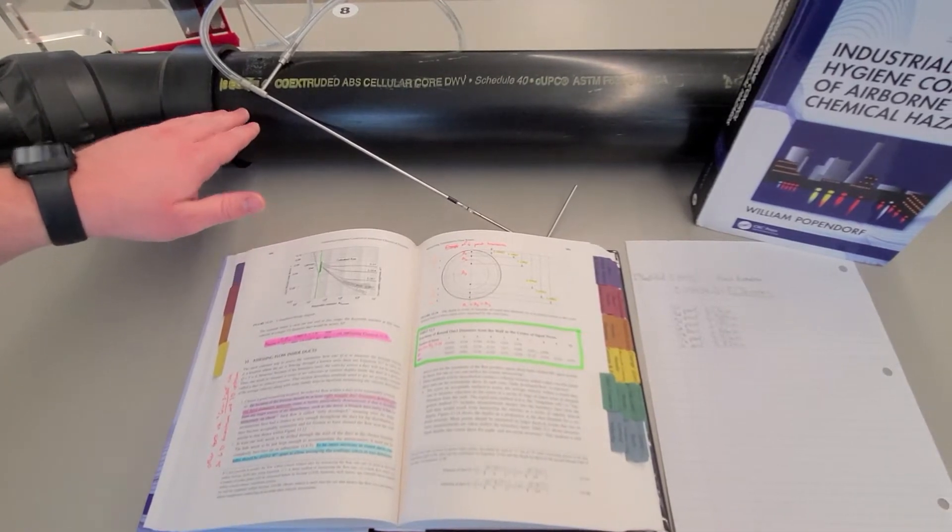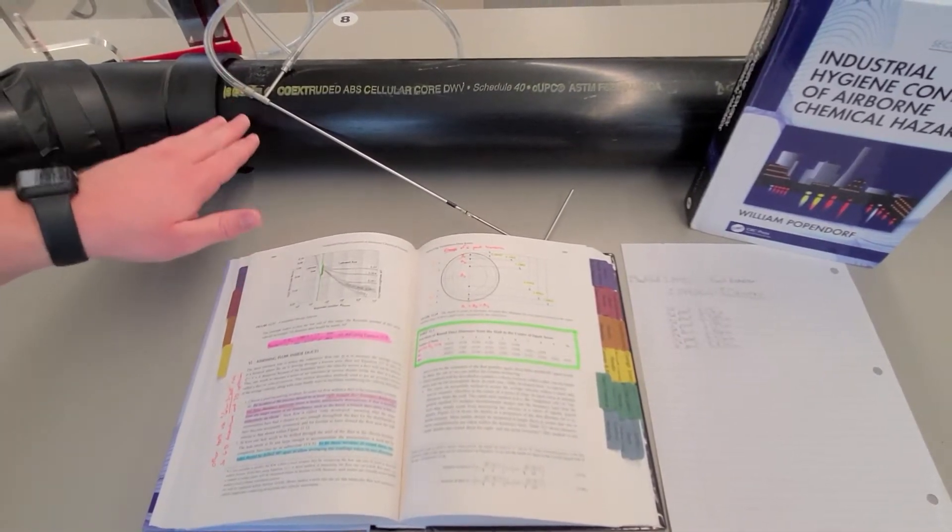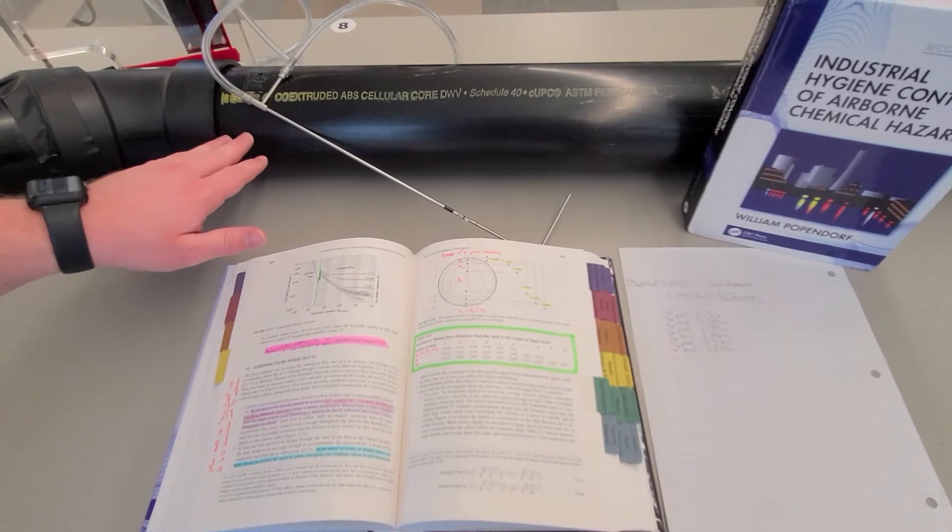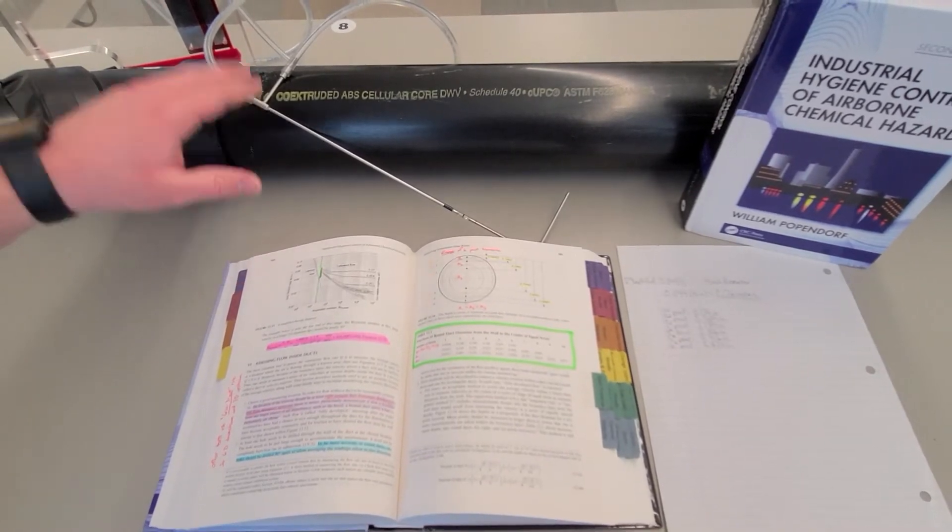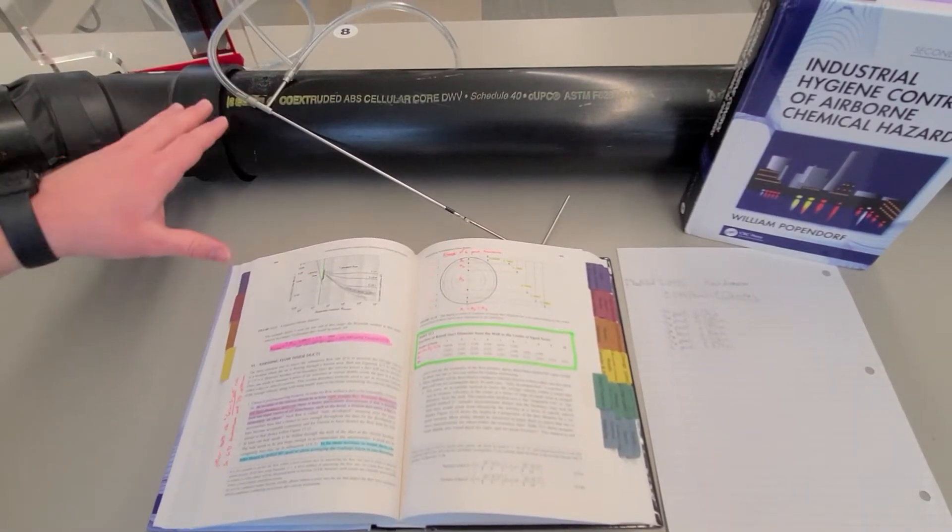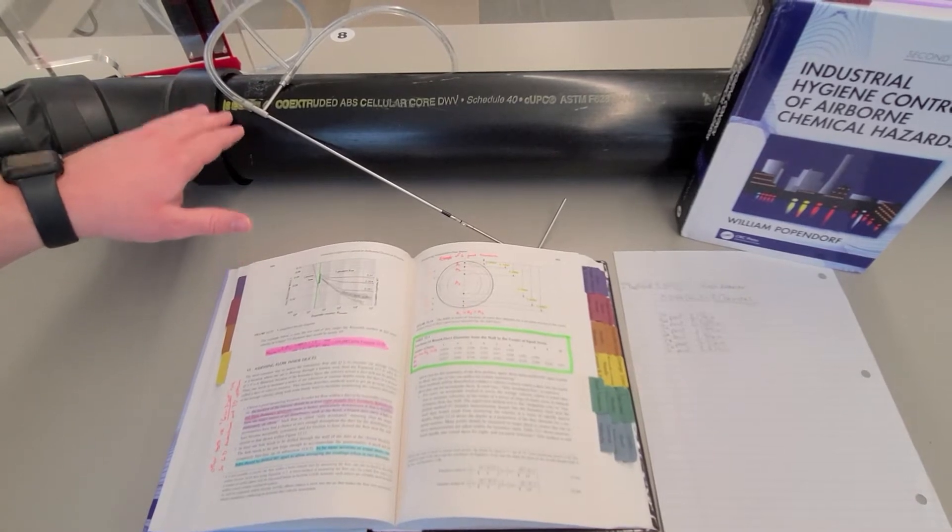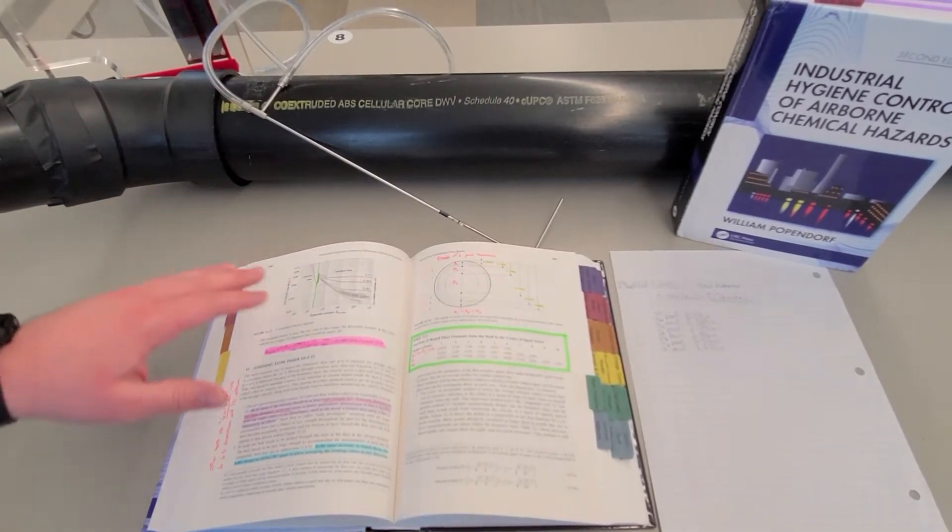The reason we need this is because across a duct the airflow will vary a little bit, and to get proper calculations of losses within a duct, among other things, you need to make sure that you have an average velocity across the whole thing.